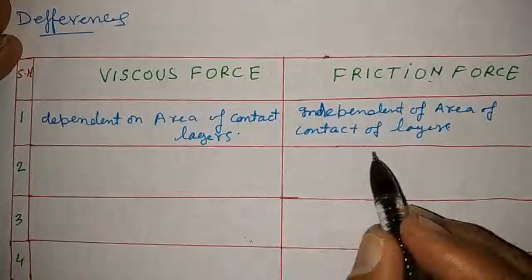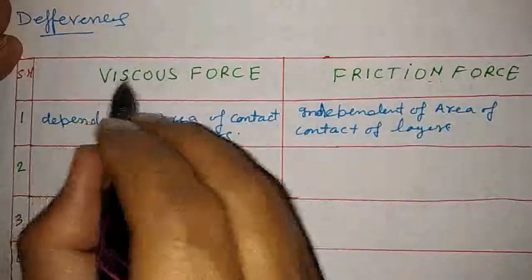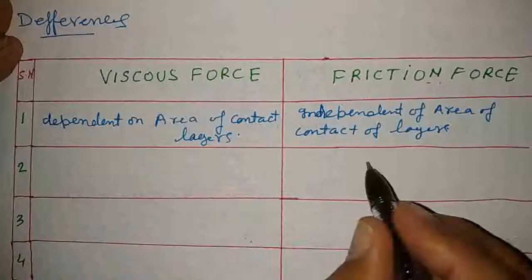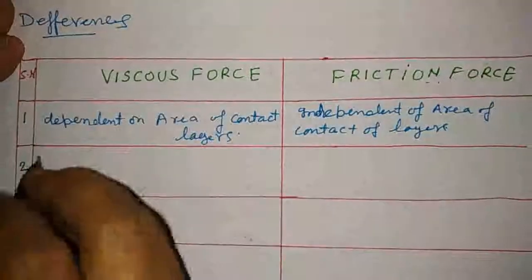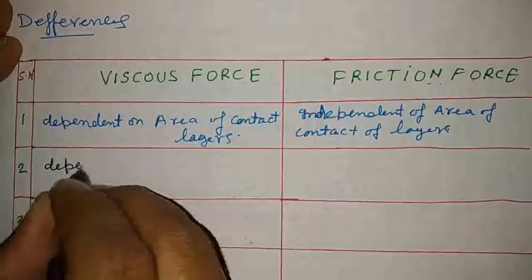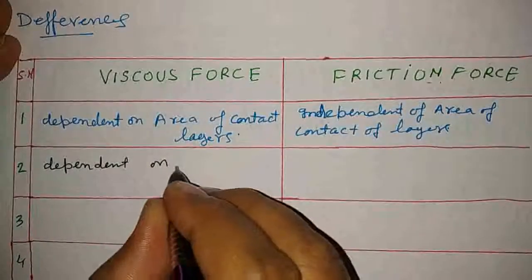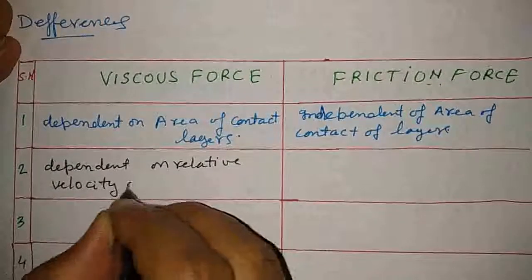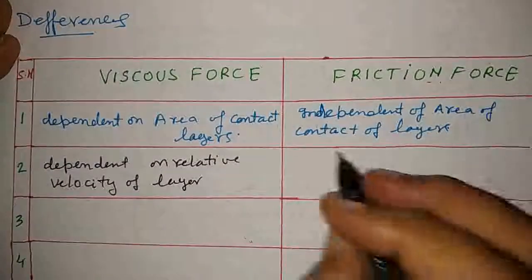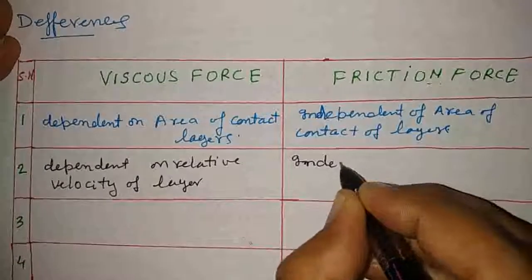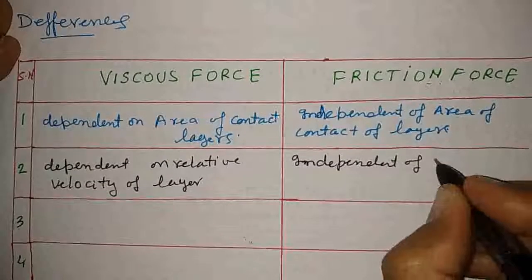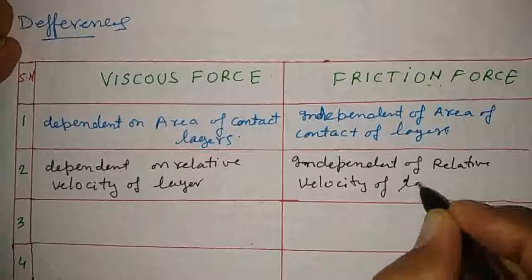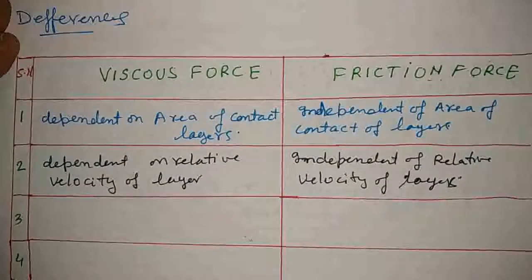The second difference is that both forces are produced due to relative motion, but in the case of viscous force, the magnitude of the force is dependent on the relative velocity of the layers. However, friction force does not depend upon the relative velocity of the surfaces on which the body is moving.